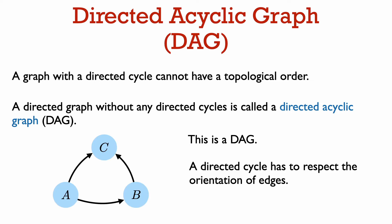So I want to emphasize that a directed cycle has to respect the orientation of the edges. A directed cycle is a way to walk on the graph from a vertex back to that same vertex, where you can only walk from vertex u to vertex v if there is an edge directed from u to v.